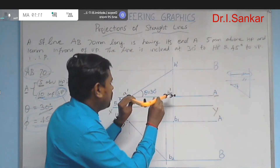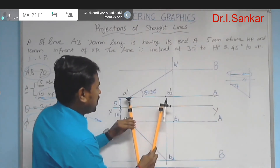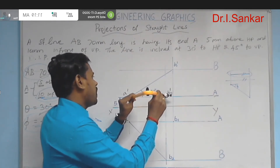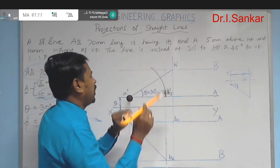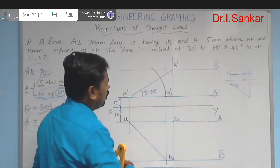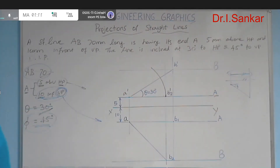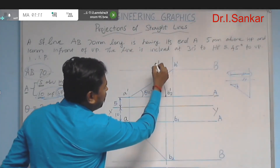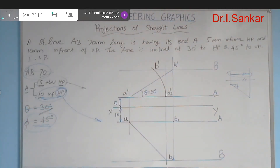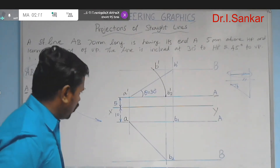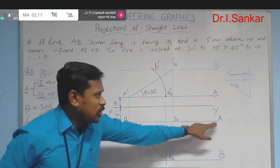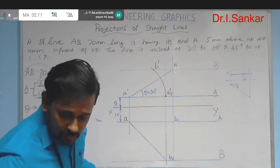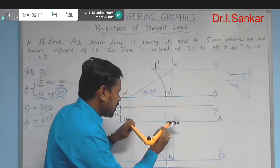Measure a'b2' with the compass. Making a' as center, draw an arc and let it cut the locus of b in the front view area. This intersection point is nothing but our final b' (b dash). In the same way in the top view area, we have point b1 on the locus of A. Move it to its own locus: make a as center and measure the compass with ab1.